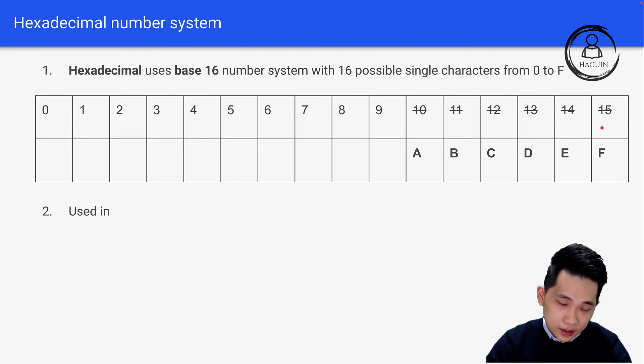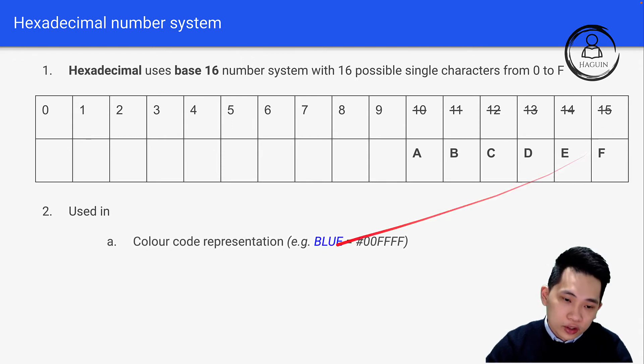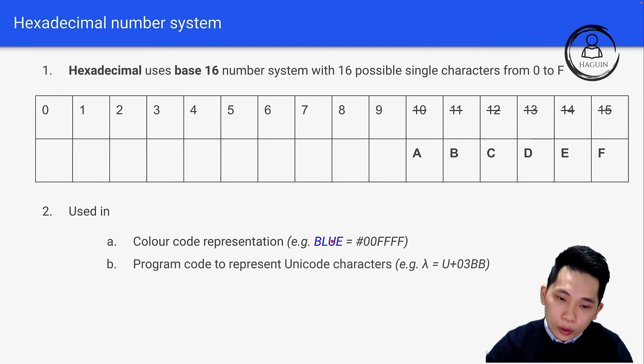What is hexadecimal used in? It's used in color code representation. For example, blue is #0000FF. This hexadecimal number represents blue color. Or we can use it in program code to represent unicode character, which we will cover in the later chapter.